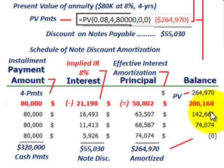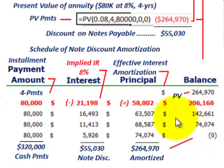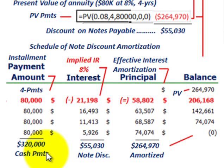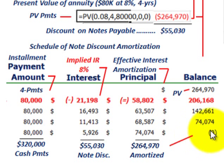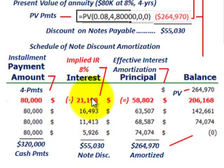You effectively amortize the present value of $264,970 down to zero. Summarizing the table: total cash payments are $320,000 over four years; total interest recorded on the income statement is $55,030 over those four years, which equals the discount calculated on the note; and the principal amortization is $264,970 reduced to zero. This amortization schedule determines the effective interest we record on our income statement each of the next four years.